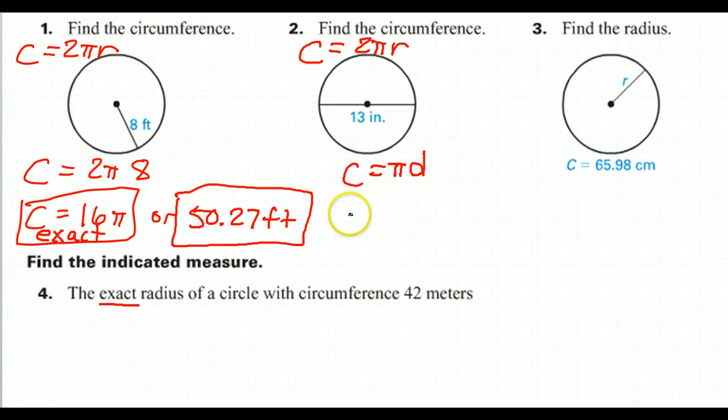And the diameter is 13, so the circumference is—think pi times 13, but it's more comfortable to write 13π. So that is the exact answer.